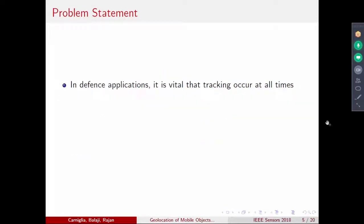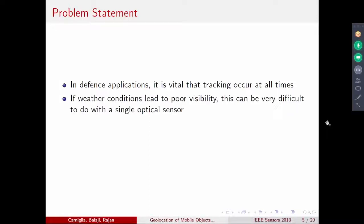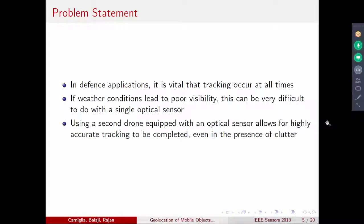The requirement in defense is that you should be able to track the object at all times without losing them. Most cases you want to do that without the enemy knowing you're tracking them. You don't want active tracking because you're giving away that you're present. This optical way of sensing is a better way. If you have weather conditions leading to poor visibility, with just a single sensor, you might lose the track. Therefore, having more sensors is advisable. The second drone with the optical sensor allows for better tracking.